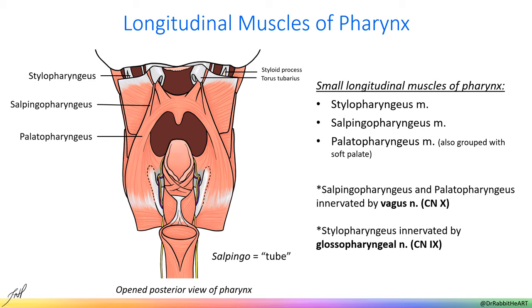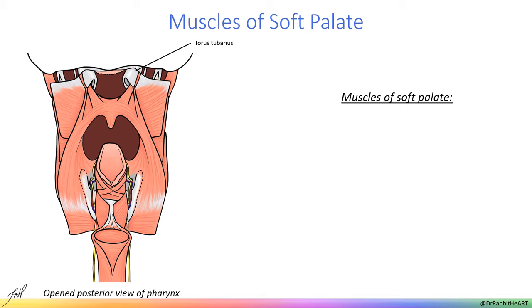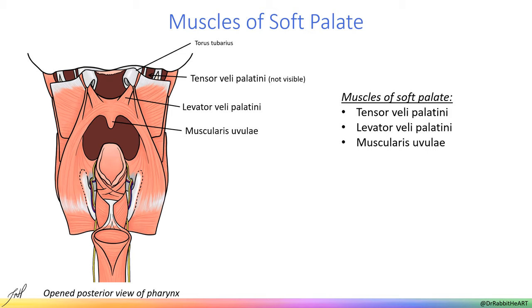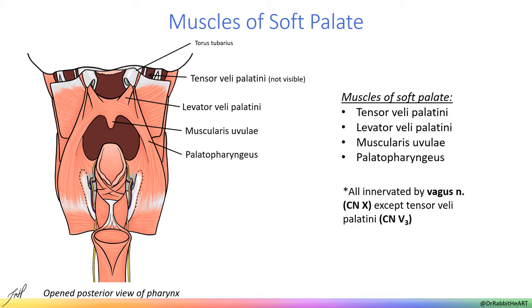Muscles of the soft palate interact closely with the pharyngeal muscles and include tensor veli palatini, levator veli palatini, muscularis uvulae, and palatopharyngeus. During deglutition or swallowing, the soft palate raises to block entry to the nasopharynx. Levator veli palatini and the muscularis uvulae elevate the palate and the tensor veli palatini muscle essentially stretches the sides to keep the palate taut. Muscles of the soft palate are all innervated by the vagus nerve except tensor veli palatini, which is supplied by the mandibular division of the trigeminal nerve or V3.